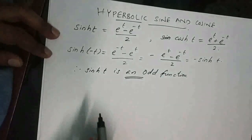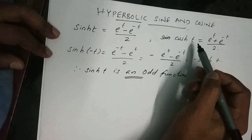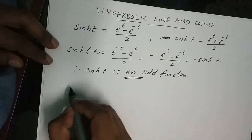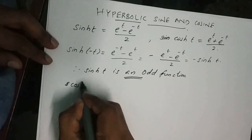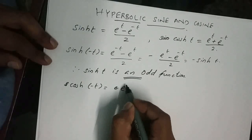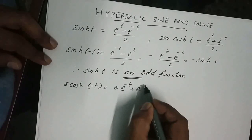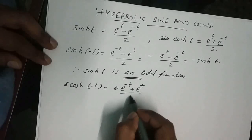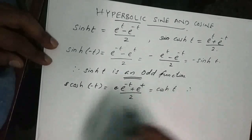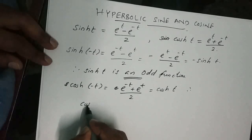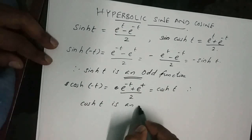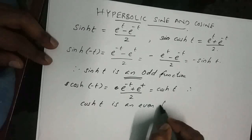In a similar way, we can show that cosh(t) or Hyperbolic Cosine is an even function. That is, cosh(-t) = (e^(-t) + e^t) / 2, which is nothing but cosh(t). So Hyperbolic Cosine, cosh(t), is an even function.